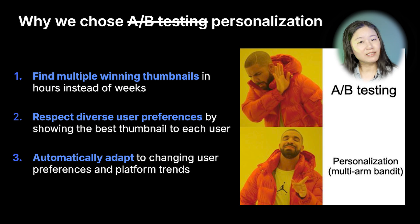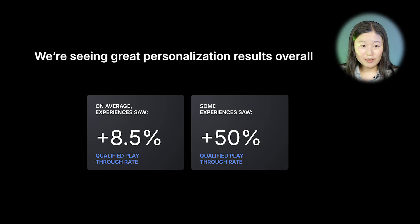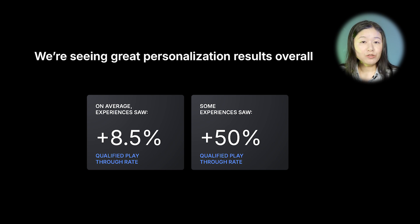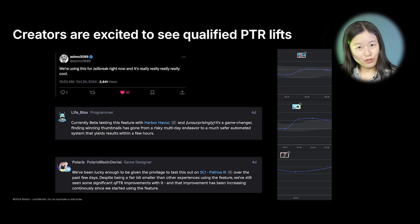Of course, all of the above are our insights, observations, and hypotheses — but we did put them to the test. Through our early tests, we've seen very exciting, encouraging results overall. On average, experiences that participated in those tests saw an 8.5% qualified playthrough lift, with some even seeing 50% lift in qualified playthrough rate. We also put this feature into the hands of a few creators of all sizes, and they all told us they were very excited to see the qualified playthrough rate lifts — some crediting this feature as a real game-changer. With these encouraging results, we're now rolling out this feature to the entire creator community so you can enjoy those benefits. With that, I'm handing it over to Peter.